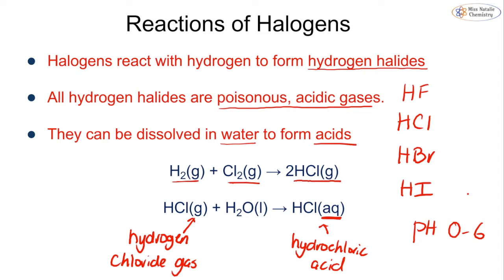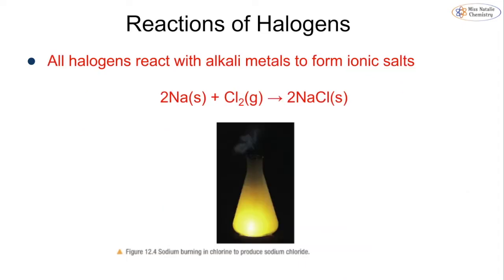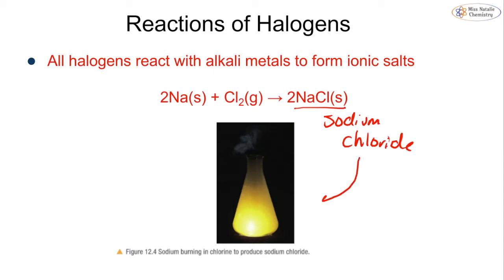When dissolved in water, hydrogen chloride becomes known as hydrochloric acid. It's important to recognise the two different state symbols because they give two different names. The halogens can also react with alkali metals to form ionic salts, as discussed in topic 2a on group 1. A quick example is sodium reacting with chlorine gas to form sodium chloride — the ionic solid — and you can see this happening in the diagram, where we heat the reaction in order for it to occur.